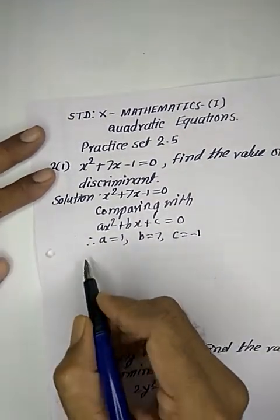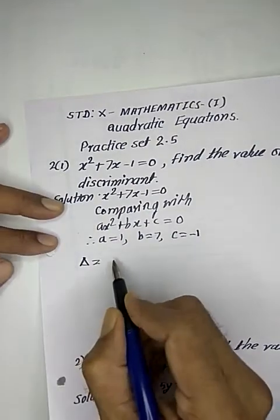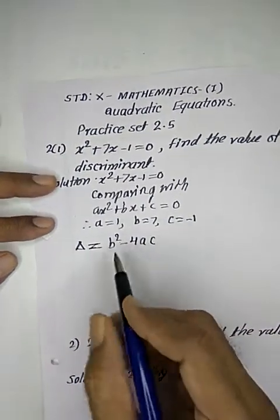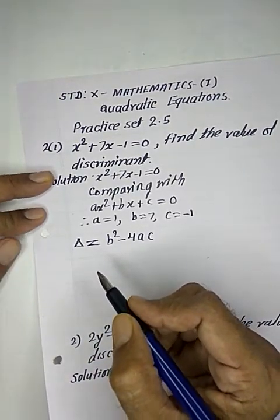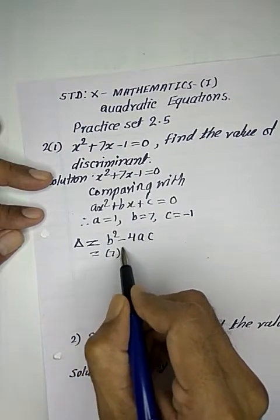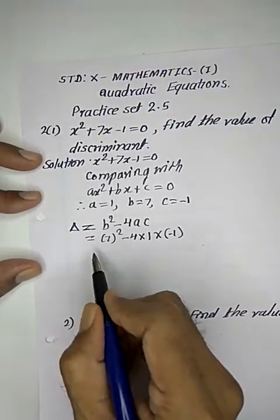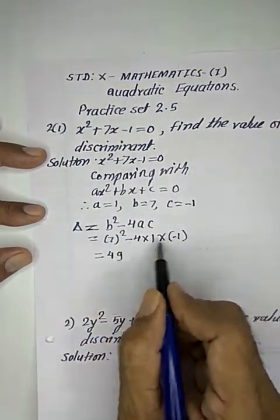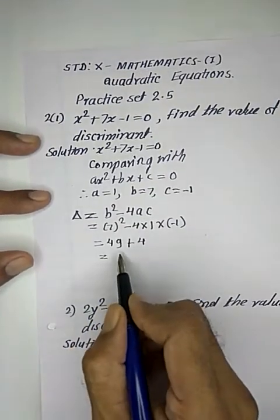The discriminant, which has the symbol Delta (Δ), is equal to b² - 4ac. The value will be b² - 4ac = (7)² - 4(1)(-1) = 49 - (-4) = 49 + 4 = 53.